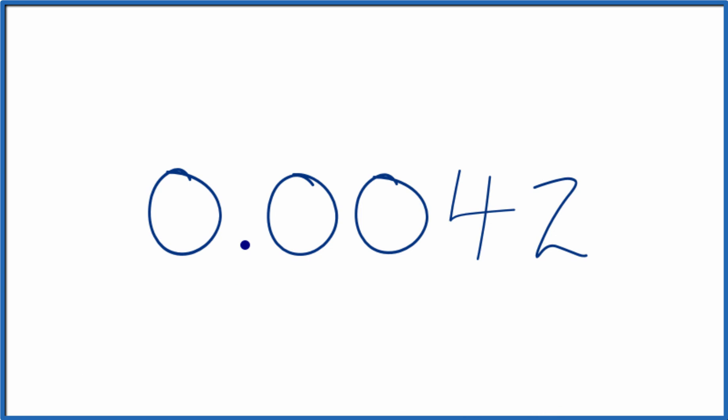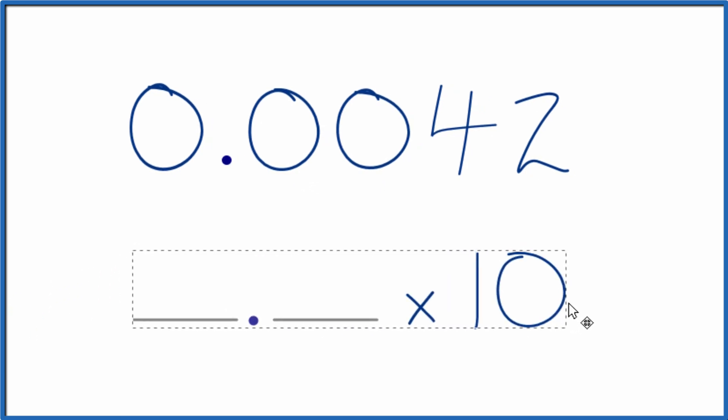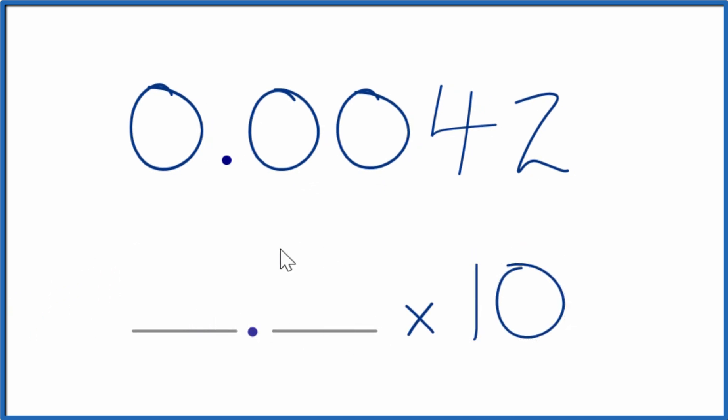So what we want to do is put this number in a format where we have a whole number, the rest of the decimal, times 10 to some power.